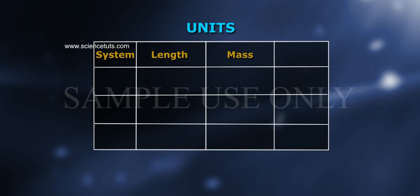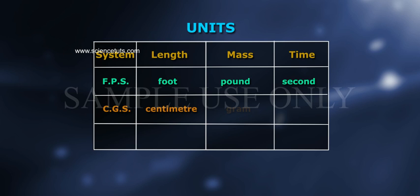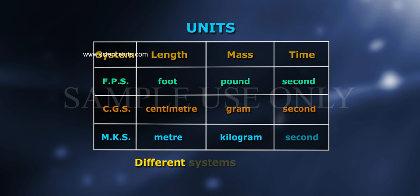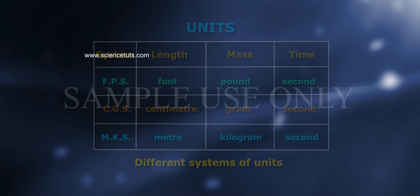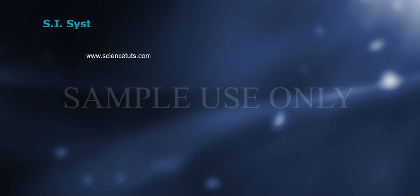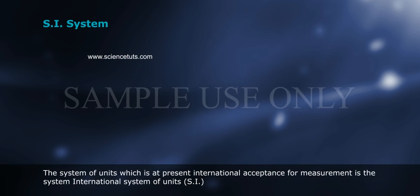Units for these three systems: FPS - foot, pound, second; CGS - centimeter, gram, second; MKS - meter, kilogram, second.